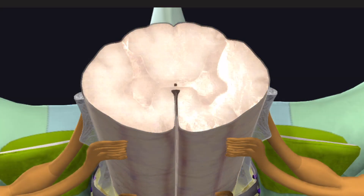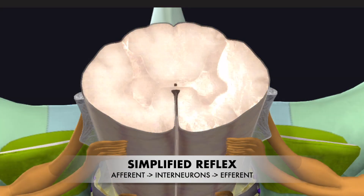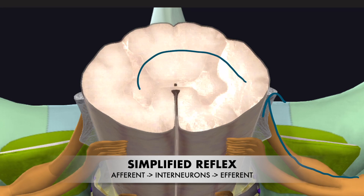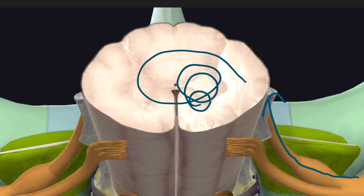In a basic reflex or basic flow of information, it typically goes from the body to the posterior side, then inside to interact with interneurons, and then back outside through the efferent route. This is an oversimplification, but it's enough for the purposes of this video.